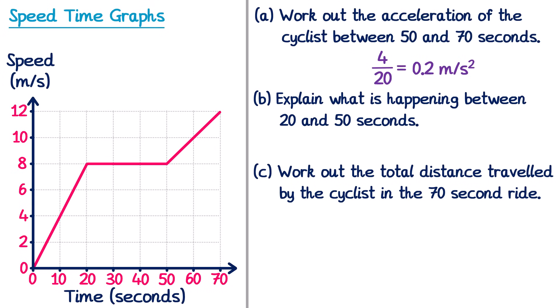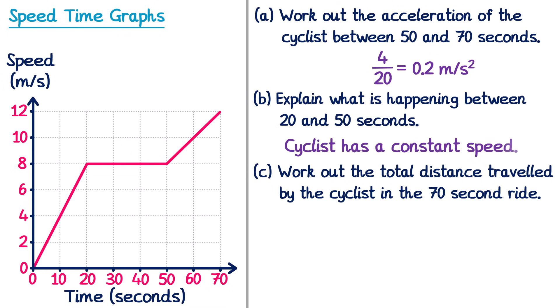Part B asks us to explain what's happening between 20 and 50 seconds. We can see a horizontal line, which means the speed is constant at 8 m/s, which means there's no acceleration. So we could say the cyclist has a constant speed, or that there is zero acceleration.